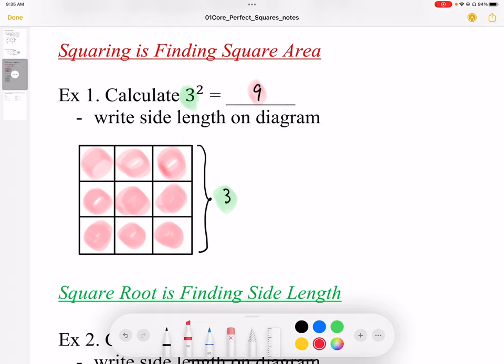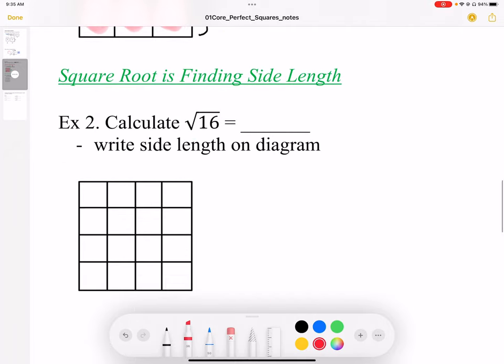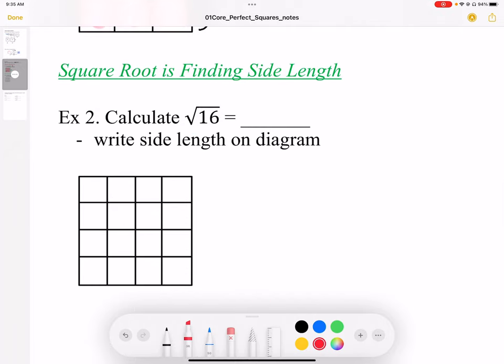Now squares and square roots are opposites, so square root is finding the side length. Here I've got an area of 16. So I have 1, 2, 3, 4, 5, 6, 7, 8, 9, 10, 11, 12, 14, 15, 16—a square with 16 squares. When I square root, I'm finding side length.